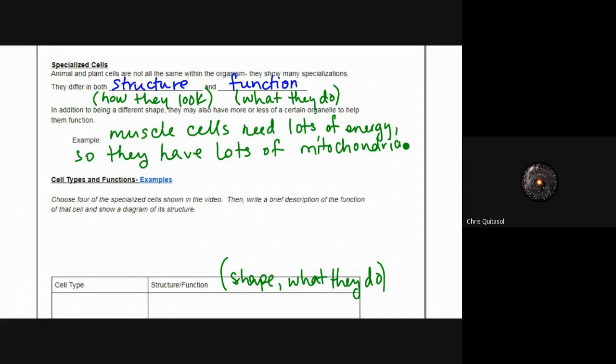Muscle cells need lots of energy, so they'll have lots of mitochondria. When we look at the four different specialized cell types in the video that was posted, you can fill in this chart.